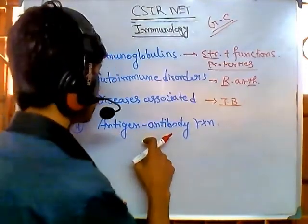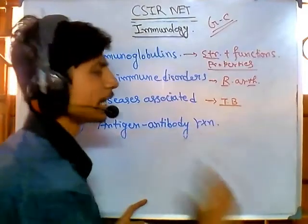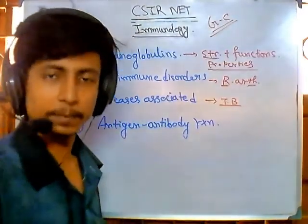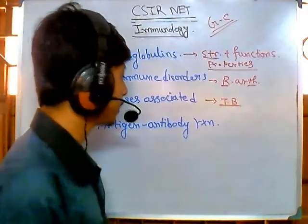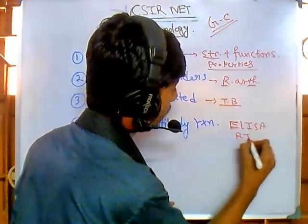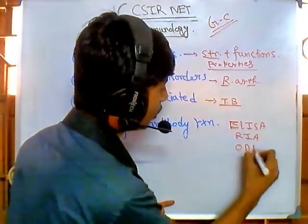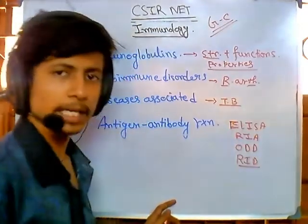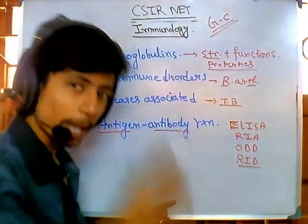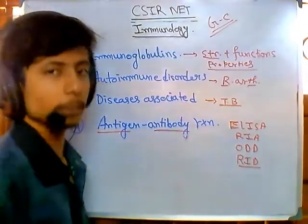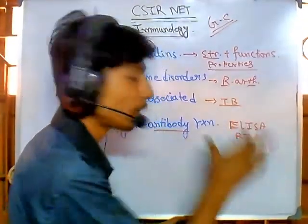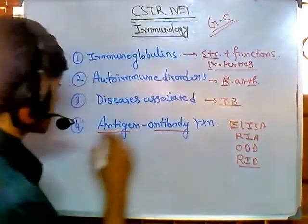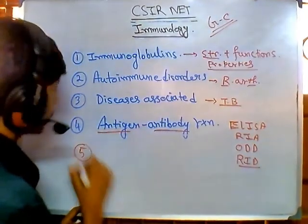Fourth, antigen-antibody reactions are a very important part — different types of analytical techniques. These include techniques like ELISA, radial immunodiffusion, Ouchterlony double diffusion, and radial immunoassay. All these different techniques are important: why they are done, why they are prescribed, their role in diagnosis, and what diseases are diagnosed by these techniques.